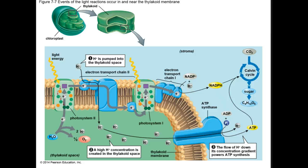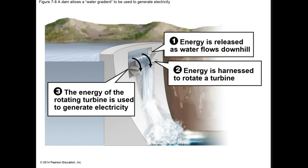As the energized electrons travel along electron transport chain 2, some of the energy liberated is used to pump hydrogen ions into the thylakoid space, creating a high concentration of hydrogen ions inside relative to the surrounding stroma. Hydrogen ions then flow down their concentration gradient through a thylakoid channel protein called ATP synthase, generating ATP from ADP. This resembles the electrical energy obtained from water flowing downhill and driving a turbine — ATP synthase captures the energy from hydrogen ions flowing down their concentration gradient and uses it to drive ATP synthesis from ADP plus phosphate.